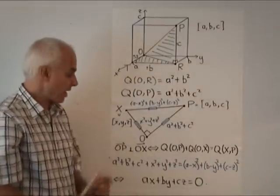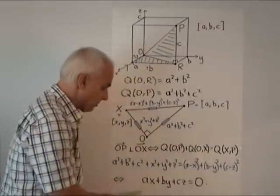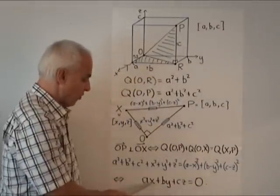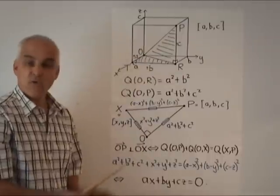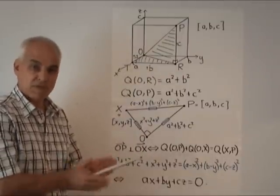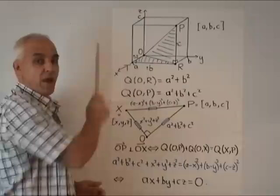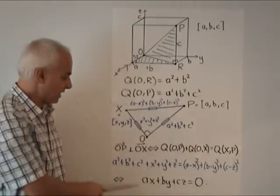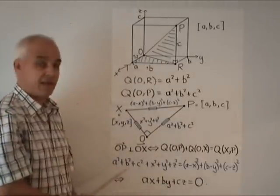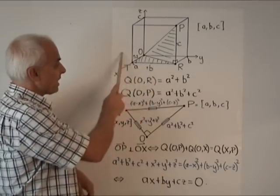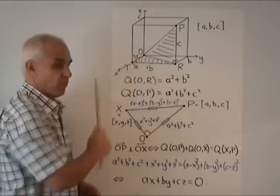AX plus BY plus CZ equals zero. So that's why this linear equation between the X, Y, Z coordinates and the ABC coordinates expresses perpendicularity between the vector OP and the vector OX. In other words, it really does describe the equation of a plane perpendicular to the line OP through the origin.